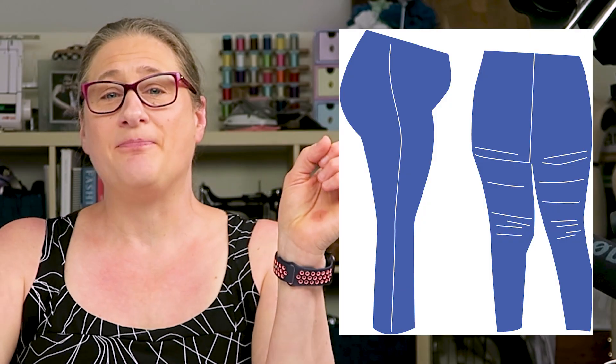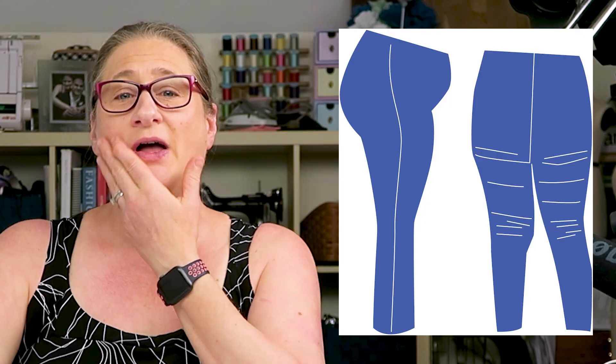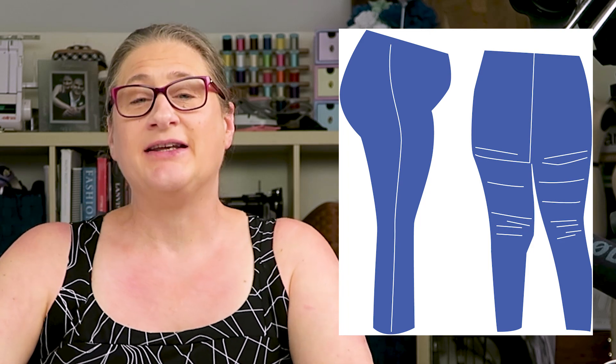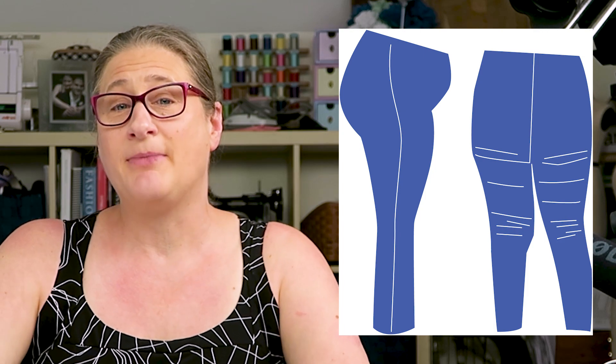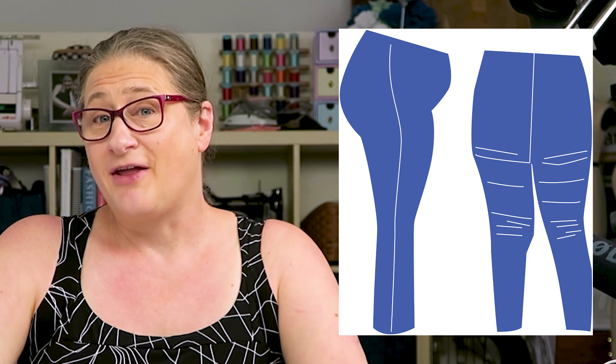You can see from her side view that the side seam, which I marked in white, is hooking to the front at the upper thigh level. And if you look at her silhouette from the side view, you can see that she has a prominent or athletic front thigh.